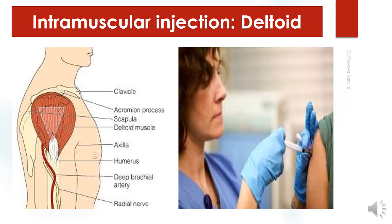The deltoid muscle is commonly used to administer intramuscular injections as it is easy to expose. The needle is injected in the central thick portion of the deltoid muscle, approximately two inches below the acromial process. Injecting too high near the acromial process may injure the axillary nerve, causing paralysis of the deltoid muscle with atrophy and loss of the round contour of the shoulder.